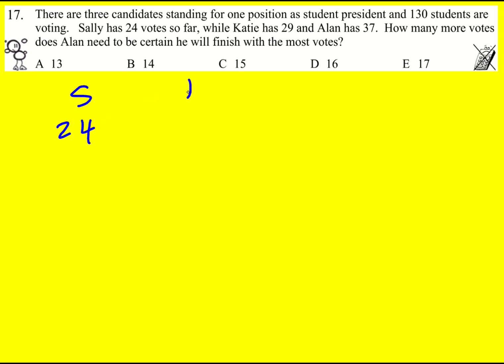Sally's got 24 votes. Katie 29 and Alan is leading with 37. How many more votes does Alan need to be certain that he's going to win?